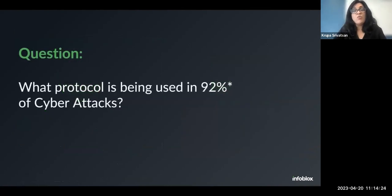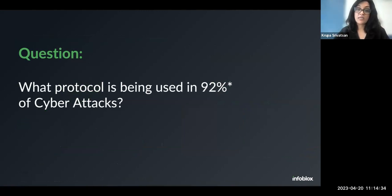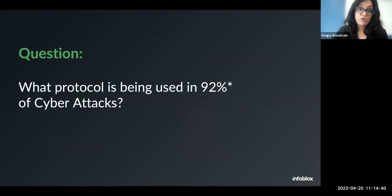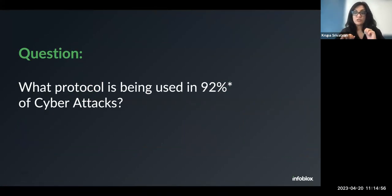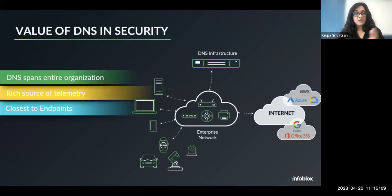One of the things most people don't realize is there is a protocol being used in 92% of cyber attacks. This is a protocol that is leveraged significantly for command and control, or C2 — that is when a network has been breached and a remote device is under the control of the bad actor, who uses command and control to send additional instructions to that device, drop in ransomware, or exfiltrate data. This predominantly happens over DNS.